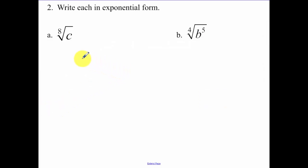So now writing each in exponential form. This is a fractional exponent. This means c to the 1/8 power. C is to the 1st power, that's why it's 1 over 8.